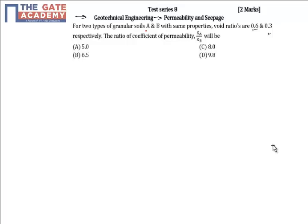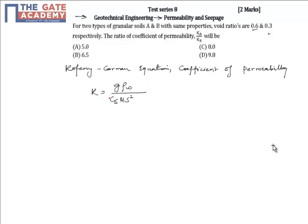Now we know that as per Coffin-Karman equation, coefficient of permeability is given as k equals d times rho w divided by c s mu s squared t squared, into e cubed divided by 1 plus e.